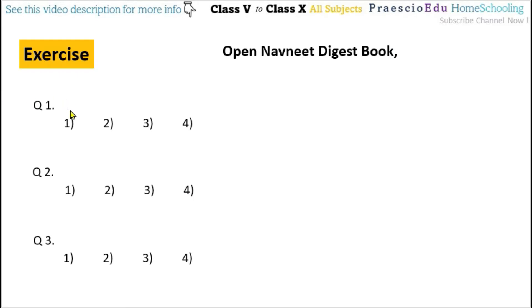Question number 1: there is a small figure and the question is find the perimeter of the given figure if each side is 7 cm.